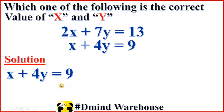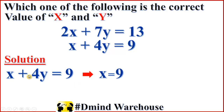Starting with x plus 4y equal to 9, this means x equal to 9 minus 4y. Because when 4y comes to this side, it changes its sign from positive to negative.